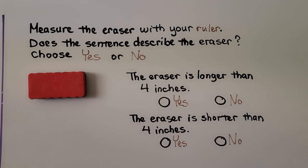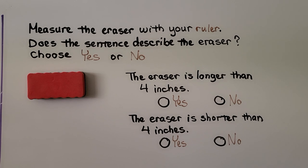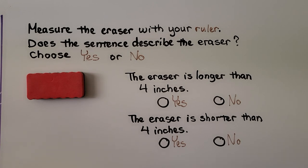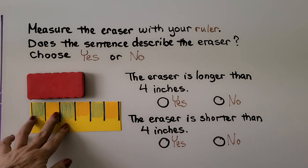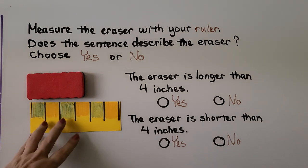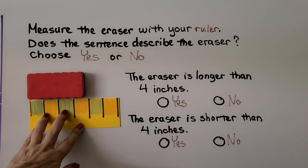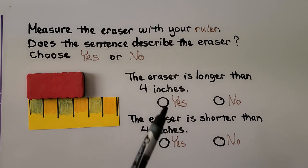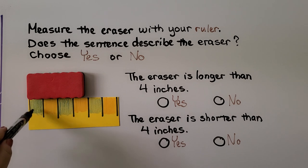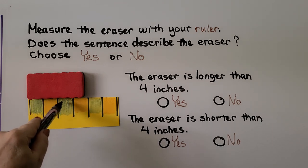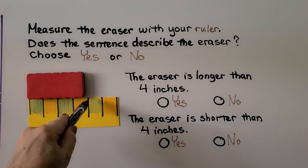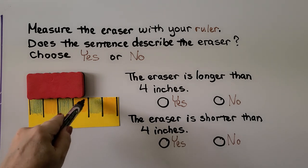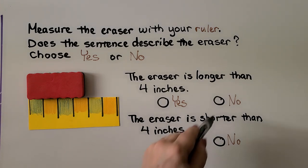This says to measure the eraser with your ruler. Does the sentence describe the eraser? Choose yes or no. So we're going to line up our ruler with the edge here. I'm going to make it nice and lined up. And the sentence says the eraser is longer than four inches. We have one inch, two inch, three inch. Well, if this space was filled it would be four inches and it's not filled all the way. So it's not longer than four inches. That would be a no.